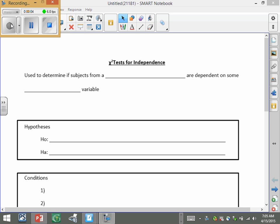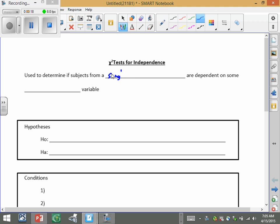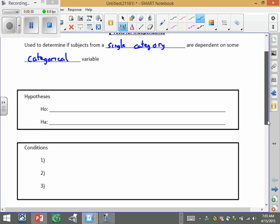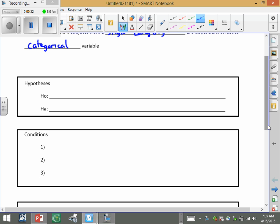Let's take a look here at a chi-square test for independence. This is slightly different than the chi-square test for homogeneity. In terms of independence, we're trying to see if subjects from some kind of single category are dependent on some type of categorical variable. You're going to see words like, is there a relationship? Does something depend on something else?